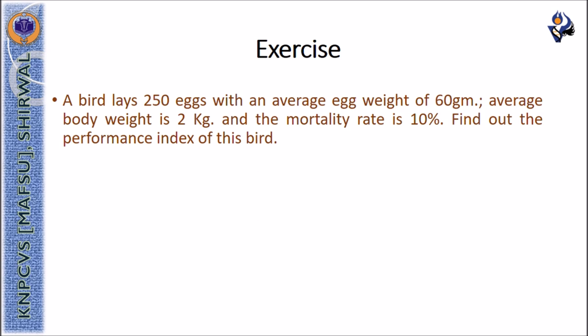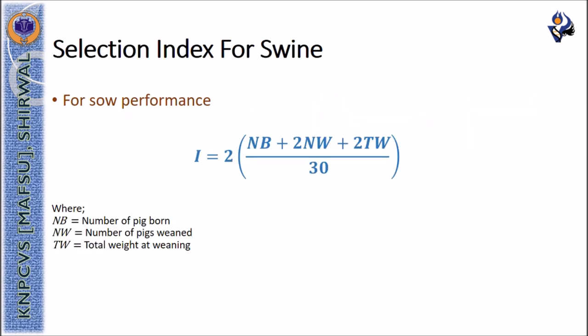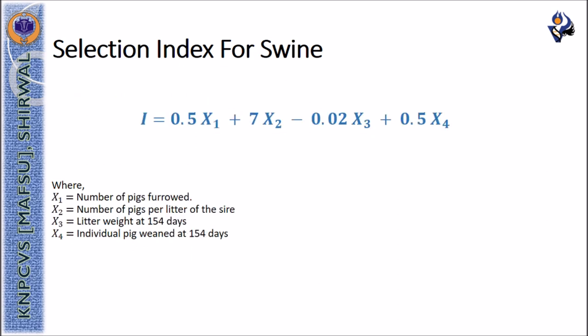The index value for swine can be calculated with the formula 2 multiplied by NB plus 2NW plus 2TW divided by 30, where NB is the number of pigs born, NW is the number of pigs weaned, and TW is the total weight at weaning. Similarly, the index for swine can also be calculated with the formula 0.5x1 plus 7x2 minus 0.02x3 plus 0.5x4, where x1 is the number of pigs farrowed, x2 is the number of pigs per litter of the sire, x3 is the litter weight at 154 days, and x4 is the individual pig weaned at 154 days.